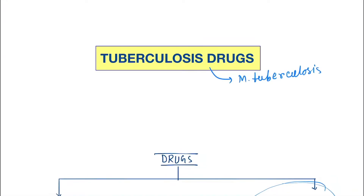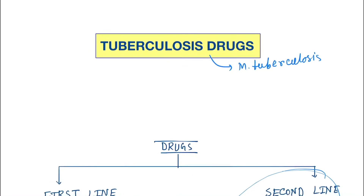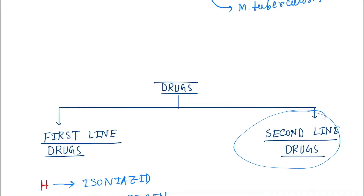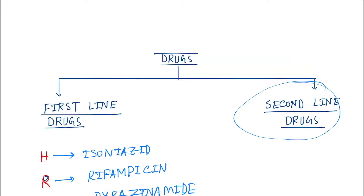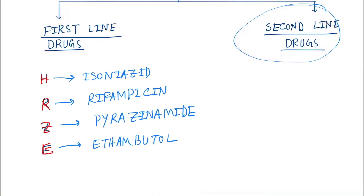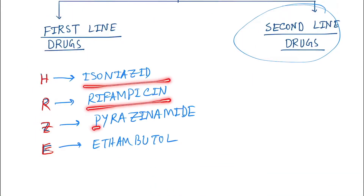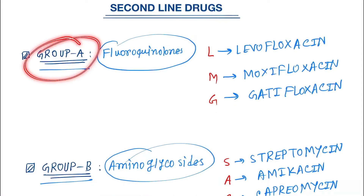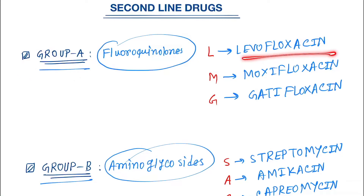Before seeing the management of tuberculosis, let's revise the drugs first. They are divided into first-line and second-line drugs. First-line drugs are H, R, Z, E: H for isoniazid, R for rifampicin, Z for pyrazinamide, and E for ethambutol. In second-line drugs, Group A is fluoroquinolones: levofloxacin, moxifloxacin, and gatifloxacin.